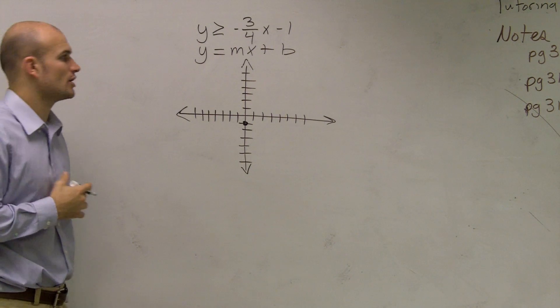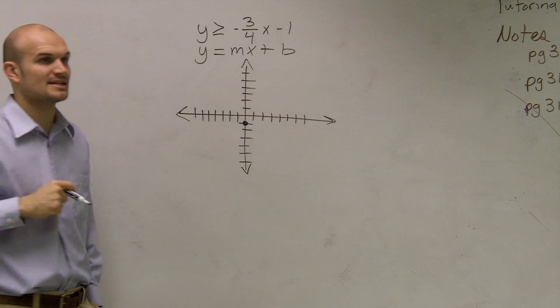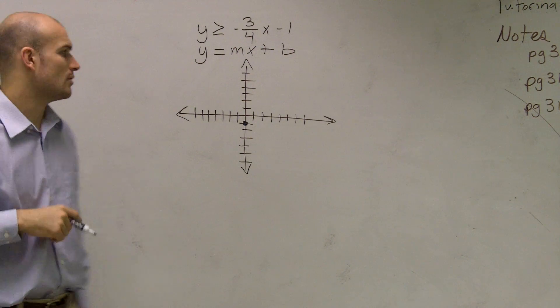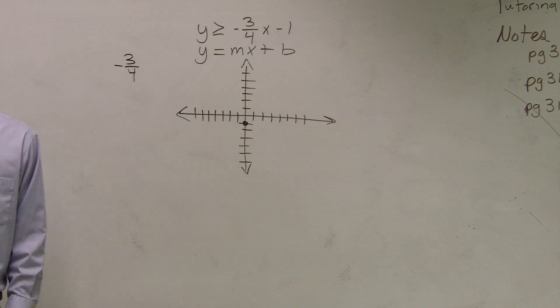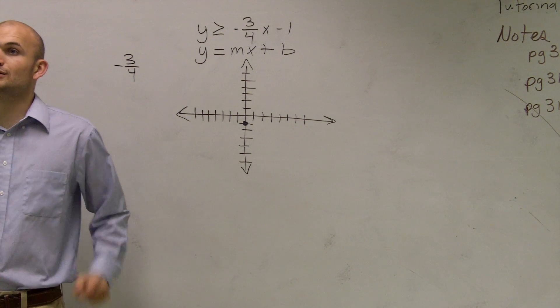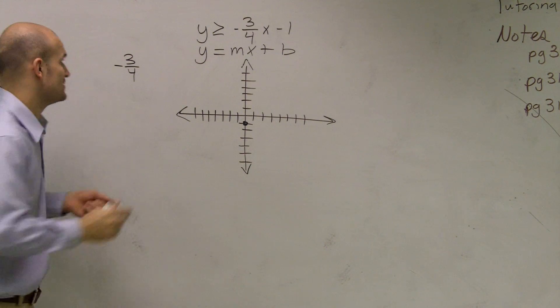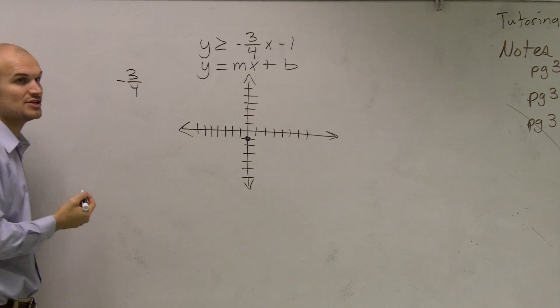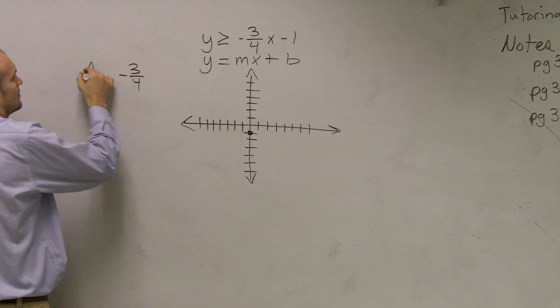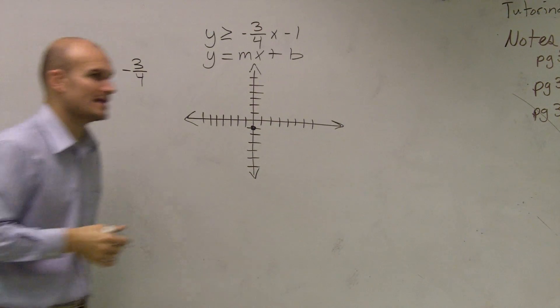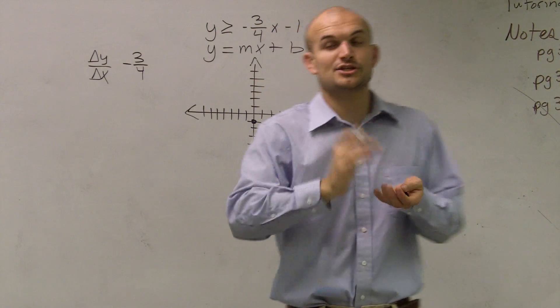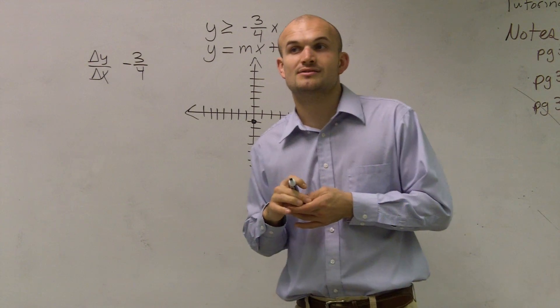Now the next thing is we need to figure out our slope. Remember our slope is the number that's in front of our x. So our slope is negative 3/4. Now one thing you guys need to remember about slopes is remember slope is a ratio between the change in y over the change in x. And we sometimes will use delta to represent the change. So remember it's your change in your y values over the change in your x values.